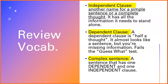An independent clause is another name for a simple sentence or a complete thought. It has all the information it needs to stand alone. A dependent clause is half a thought — it almost looks like a sentence, but you're missing information. It fails the guess what test. A complex sentence is a sentence that has one dependent and one independent clause.